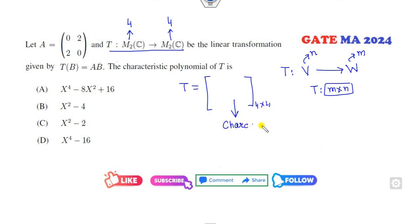So corresponding to the 4 cross 4, what is the degree of the characteristic polynomial? It must be x raised to power 4. So that means B and C options are directly cancelled.